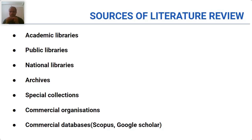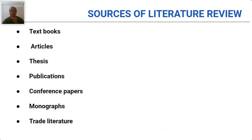What are the various sources of literature? You can have academic libraries, public libraries, national libraries, and commercial databases — all of them can be used. Other sources include textbooks, articles, theses, publications, conference papers, monographs, and trade literatures. This list doesn't end — it finally depends on what you want and from where you can get it.